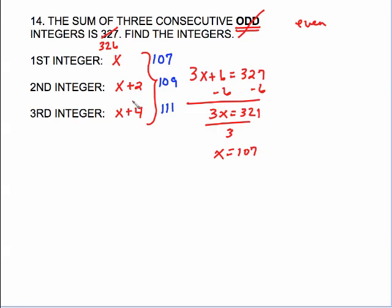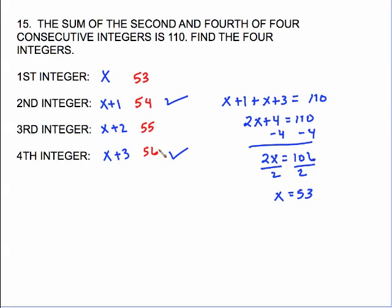So I would have the exact same setup here, but this would equal 326. I just want you aware whether it says odd or even, it's the exact same setup. x, x plus 2, x plus 4, and then do whatever it says. Add them all up like this one said, or this next one had this relationship between like the second and the fourth.